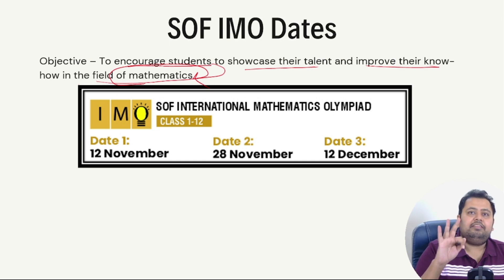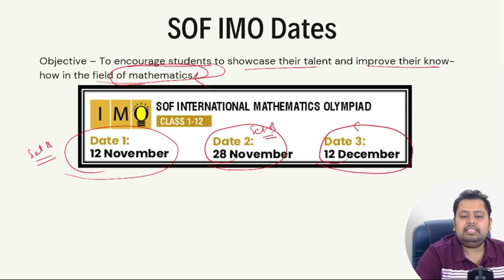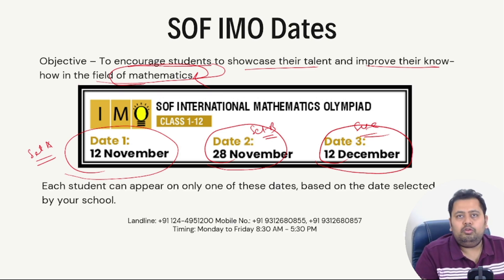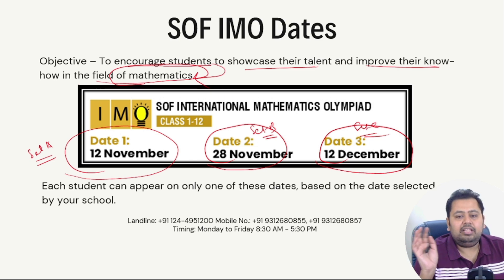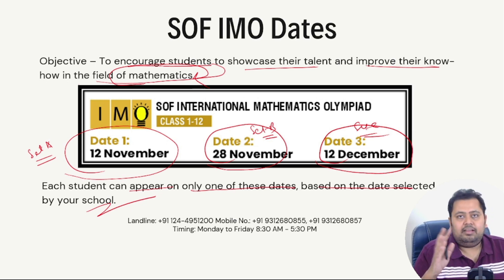This year, like every year, the examination happens on three different dates with three different question papers: Set A, Set B, and Set C. Set A is on 12th November, Set B is on 28th November, and Set C is on 12th December. Your child can only appear for one examination, and this depends on the date selected by your school.